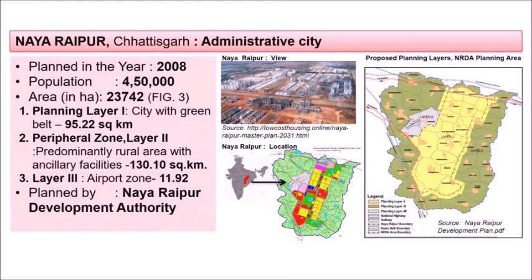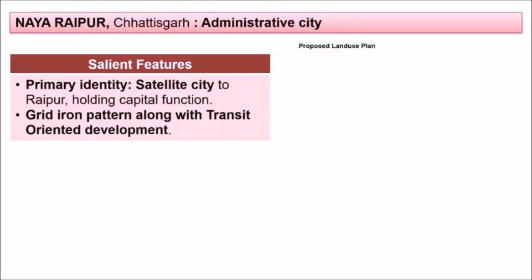Naya Raipur in Chhattisgarh was planned in the year 2008 with a population of four and a half lakhs and an area of 23,742 hectares. From the map, there is planning layer one — a city with a green belt; layer two — a peripheral zone which is a predominantly rural area with ancillary facilities; and layer three — the airport zone. The city was planned by the Naya Raipur Development Authority.